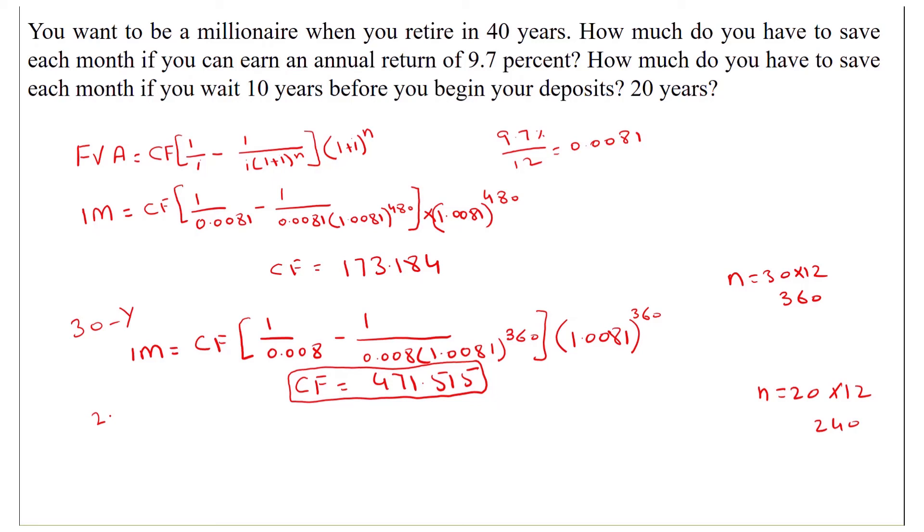So if n is 20 years, 1 million annuity equals cash flow: 1 divided by 0.0081 minus 1 over 0.0081 times 1.0081 raised to power 240, and multiply by 1.0081 raised to power 240. And the answer of the cash flow will be 1368.97.